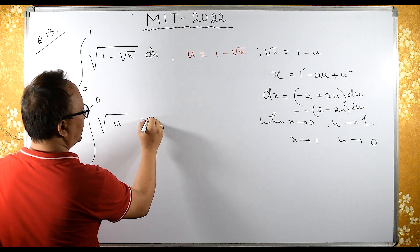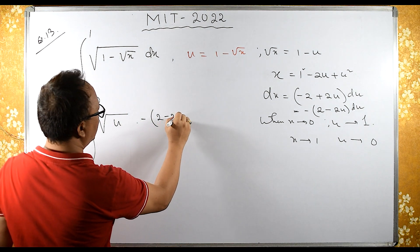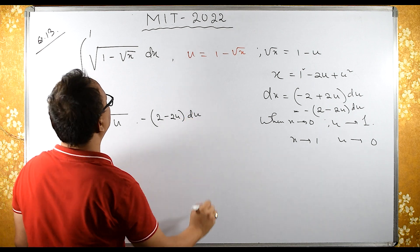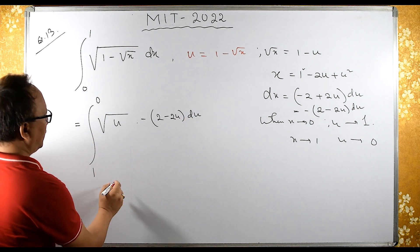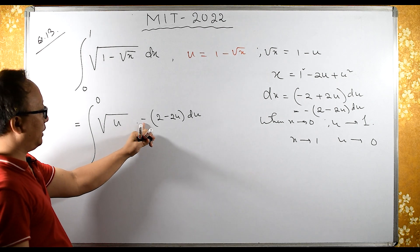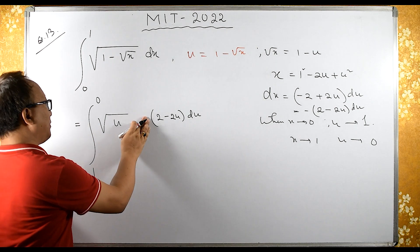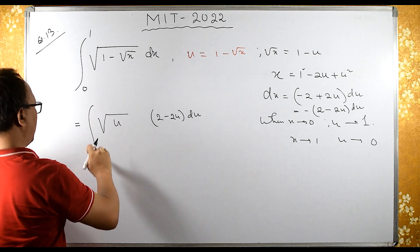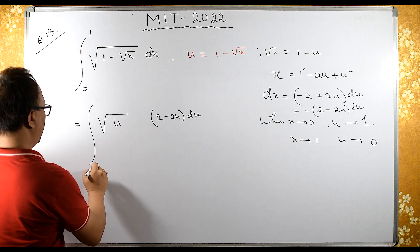This minus I can remove by interchanging the limits. If I remove this minus by changing limits from 1 to 0, it becomes 0 to 1.